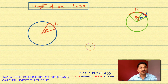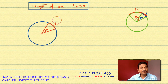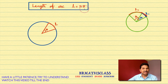In this class, we will learn why the length of an arc L is r theta. If L is the length of an arc, why we write this formula L equal to r theta — we will try to understand this.